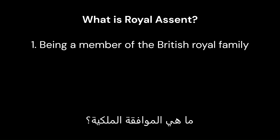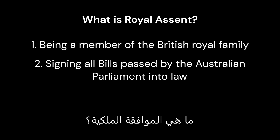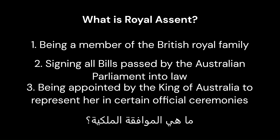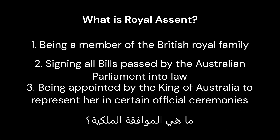What is the Royal Assent? 1. Being a member of the British Royal Family. 2. Signing all bills passed by the Australian Parliament into law. 3. Being appointed by the King of Australia to represent her in certain official ceremonies. The correct answer is 2. Signing all bills passed by the Australian Parliament into law.